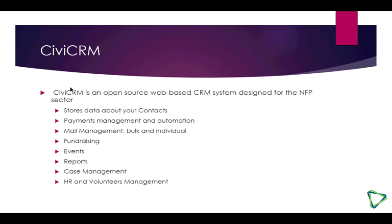CVCRM facilitates event registration. You can define your event and people register and pay online. If you allow it, they can also say they'll pay offline. The moment they pay, the registration is counted and you know how many people will attend. Once they've attended, you can tick off who actually came. The system can be set to send online invoices, registrations, scheduled reminders that the event is coming up, or reminders that someone hasn't paid yet.